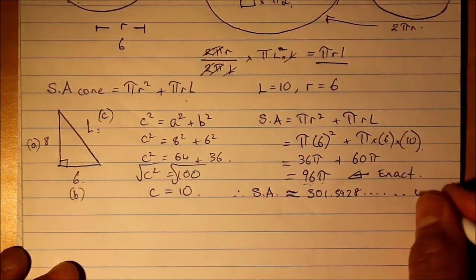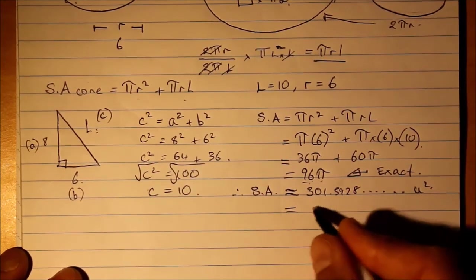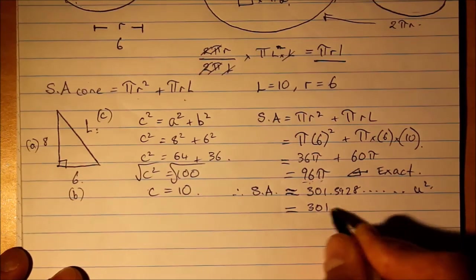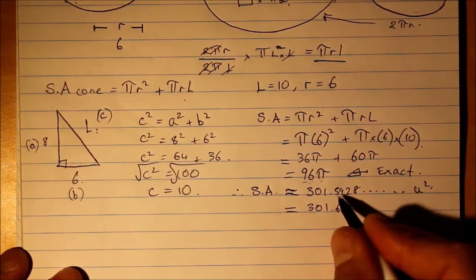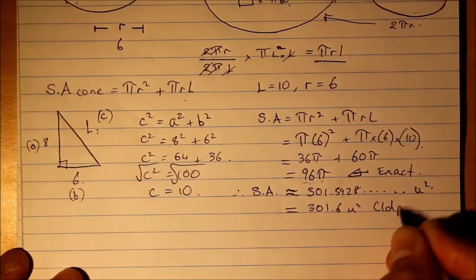And this is units squared. So we're going to round this now to one decimal place. 301.5928, the 9 rounds that 5 up to a 6. 301.6 units squared to one decimal place.